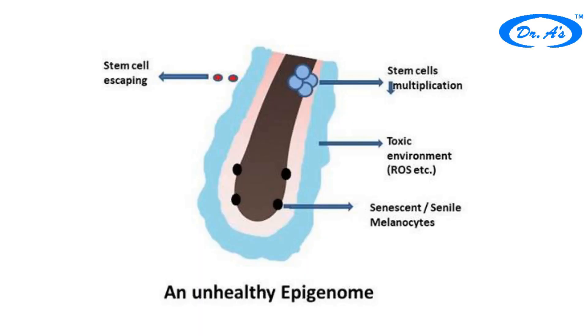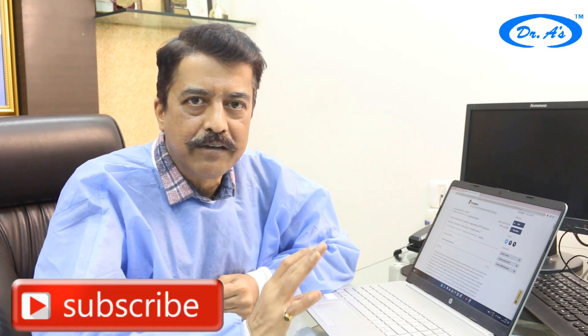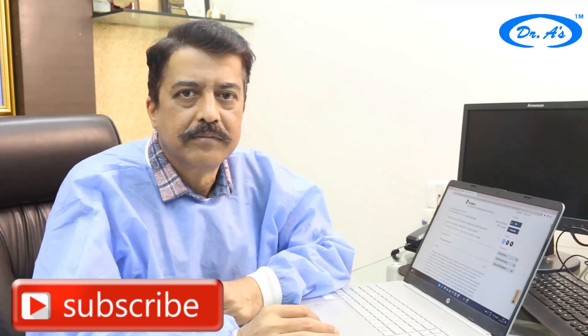In our body, cells keep multiplying when they are young, but sometimes they change. A cell can die, it can turn cancerous and start multiplying uncontrollably, or it can reach a stage where it cannot multiply any further — that is when its telomeres have become very short. When cells stop multiplying because their telomeres are very short, and they neither die off nor become cancerous, we call them senescent cells. These cells keep secreting harmful chemicals which in turn harm nearby cells, turning them also senescent.